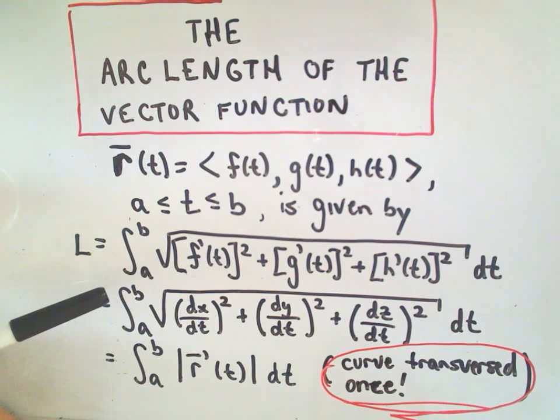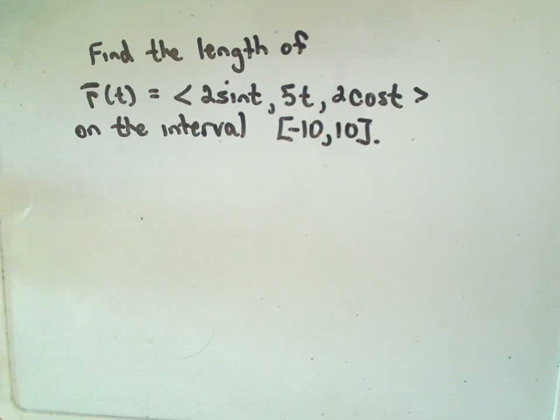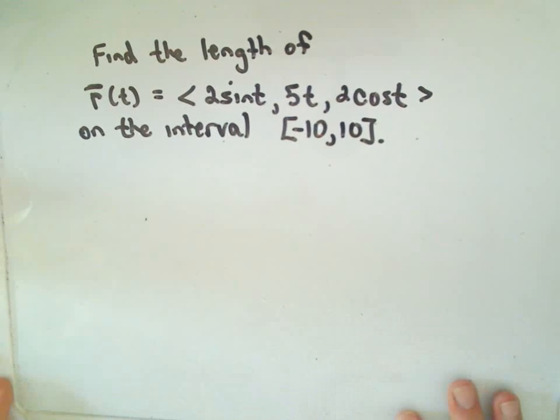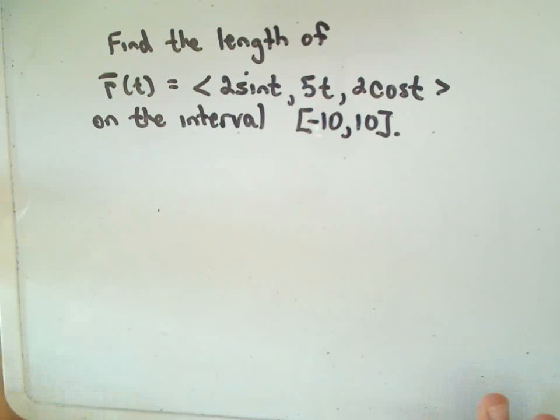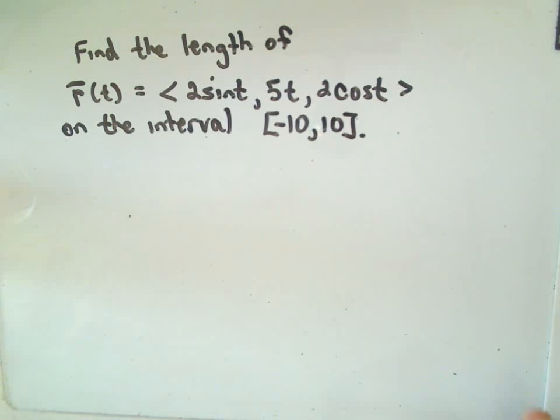These two at the bottom are just alternate notations. If you remember the arc length formula for parametric equations in two dimensions, it's very analogous. You just tack on the extra z component or k component. Let's do a simple example. We want to find the length of this vector function r of t equals 2 sine t, 5t, 2 cosine t on the interval negative ten to ten.